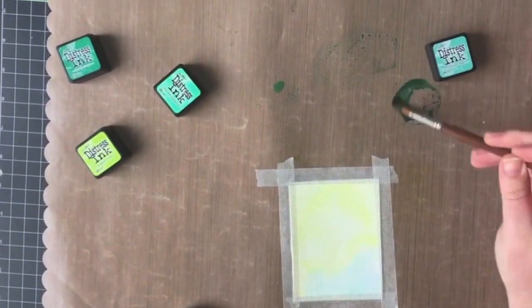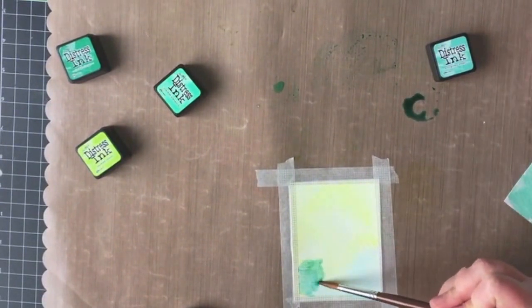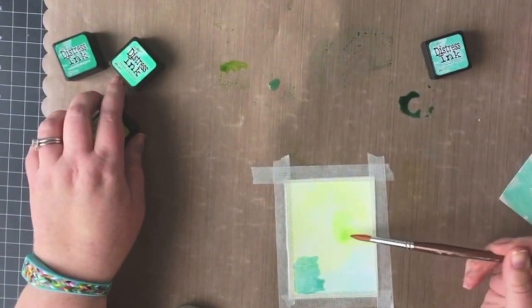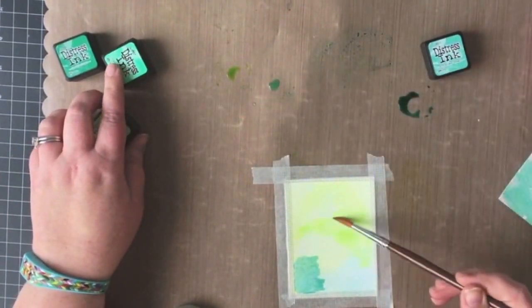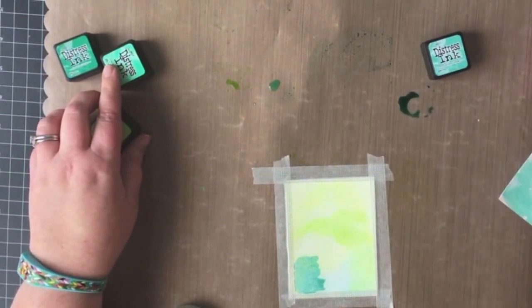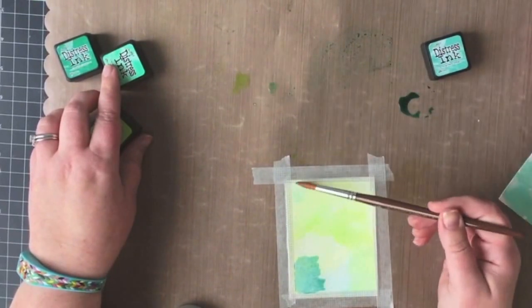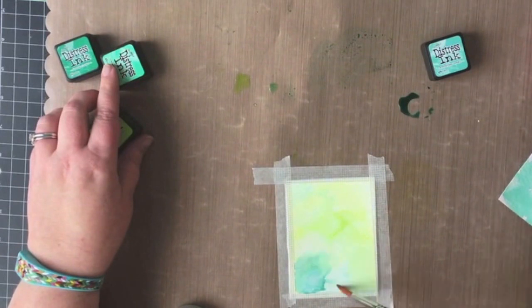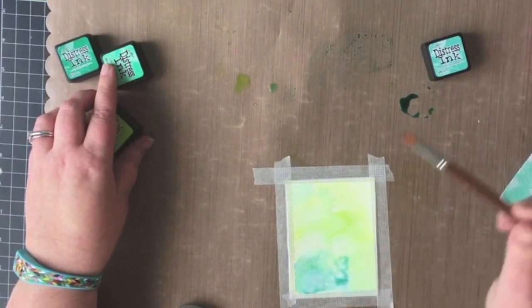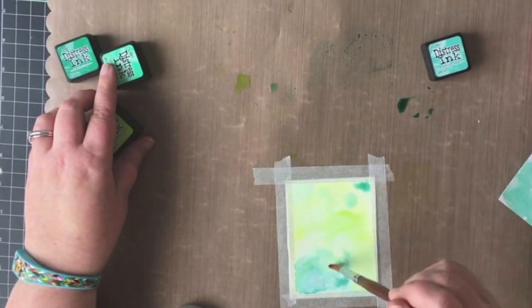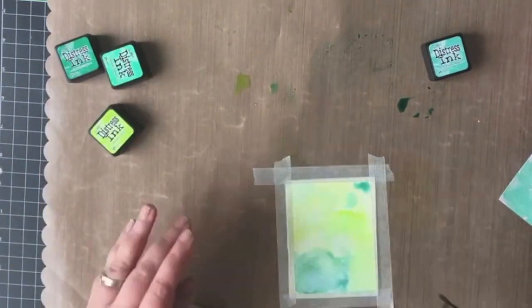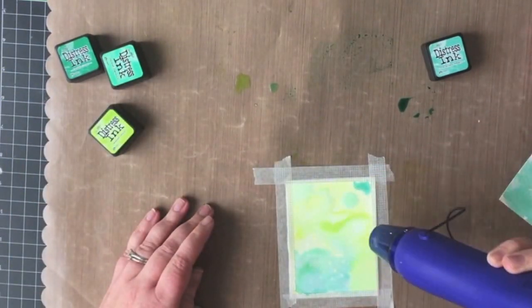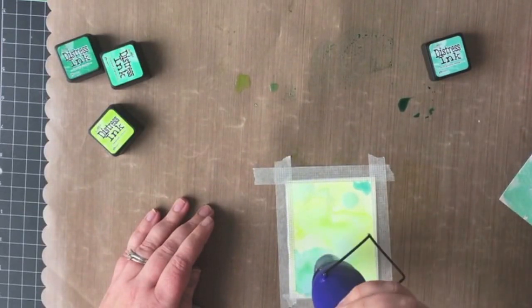Now I'm going back in with another layer of the distress inks and to help make sure that my cardstock doesn't warp too much I went ahead and I taped it down to my craft mat using just some washi tape. I've seen a lot of people tape it onto a wooden cutting board and I'm sure that works really well too but I was just using what I had available to me right now.